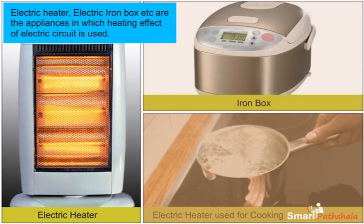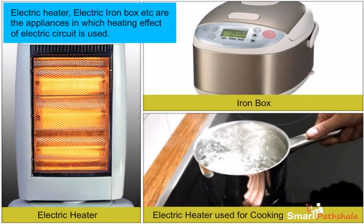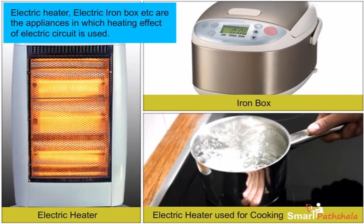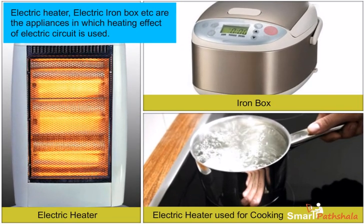Electric heater, electric iron box, etc. are the appliances in which heating effect of electric circuit is used. Try to list out some other appliances which show heating effect of current.